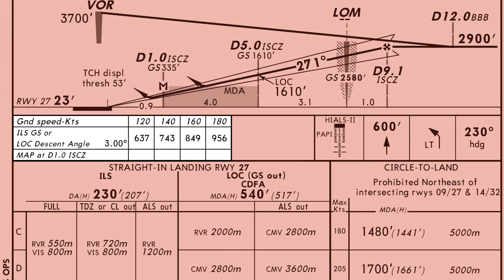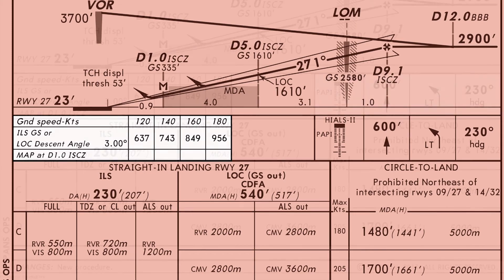Below the profile view there is a simple table for conversion of ground speed into expected rate of descent on the glide path. The glide angle is 3 degrees, and on this approach an aircraft with a ground speed of 140 knots should achieve a normal rate of descent of 743 feet per minute. If in actual conditions a pilot achieves a significantly different rate of descent, they may be on a false glide slope.